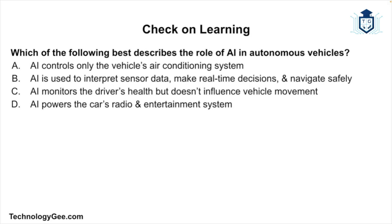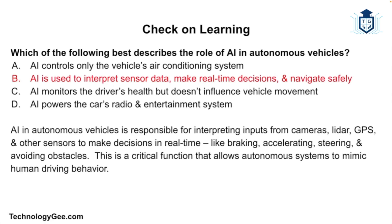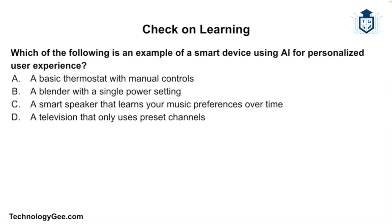Let's do some check on learning. Question one: which of the following best describes the role of AI in autonomous vehicles? The correct answer is: AI is used to interpret sensor data, make real-time decisions, and navigate safely. AI in autonomous vehicles is responsible for interpreting inputs from cameras, LiDAR, GPS, and other sensors to make decisions in real time — like braking, accelerating, steering, and avoiding obstacles — mimicking human driving behavior.